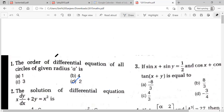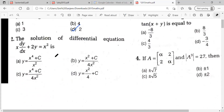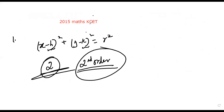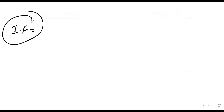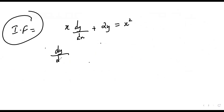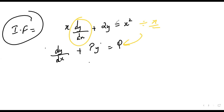Now the second question: find the solution of the differential equation x·dy/dx + 2y = x². For this kind of question we need to calculate the integrating factor. We first rewrite it in the standard form dy/dx + Py = Q. Since x is in front, we divide the entire equation by x.